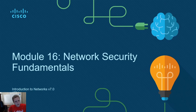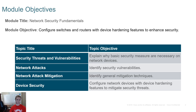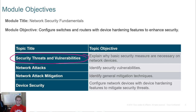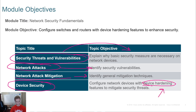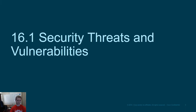Welcome back to CCNA1. We're going to talk about some network security fundamentals. In this video, we're going to talk about security threats and vulnerabilities, what those mean and why they're important. Next, we're going to talk about network attacks and different vulnerabilities. We're going to talk about different ways to mitigate some of these attacks. And we're going to talk about device security and device hardening in the fourth section.